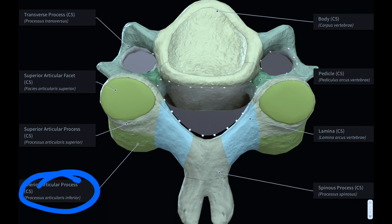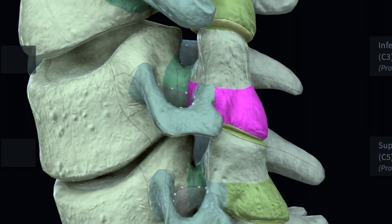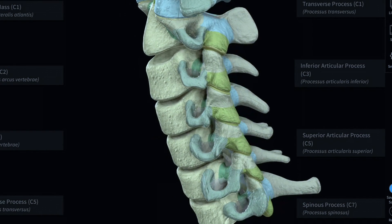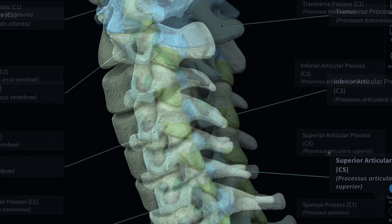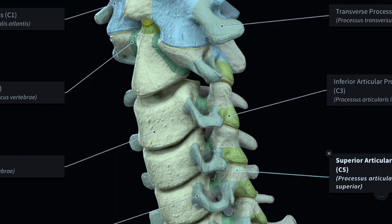You have this inferior articular process here — we call it the inferior articular process because it's going to articulate with the joint below it. That inferior articular process is basically making a connection with the joint right underneath, and this is what makes up what's known as the articular pillars. When you're palpating a patient's cervical spine as an osteopathic physician, you're really focusing on these articular pillars. These pillars are helpful in assessing cervical spine motion and figuring out the position of ease or restriction in a patient.